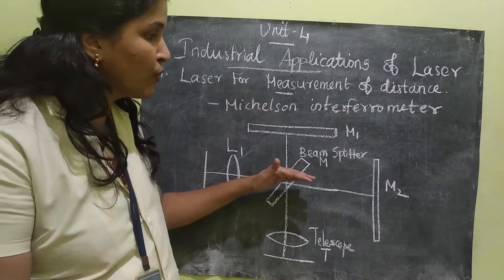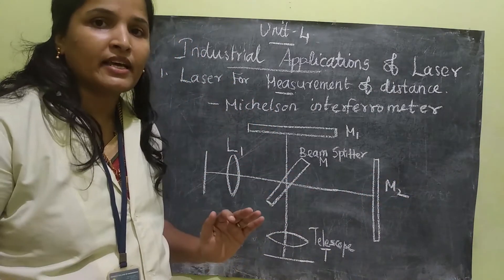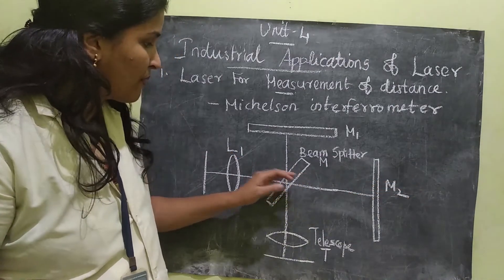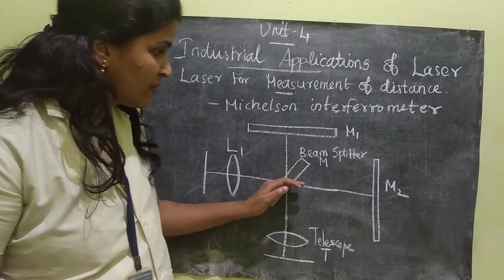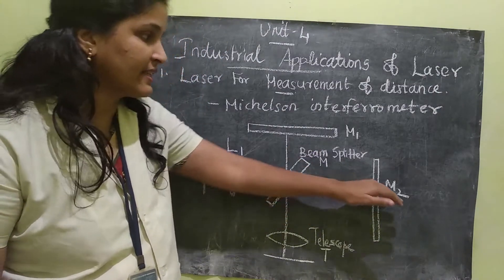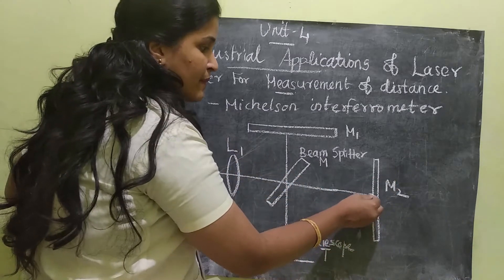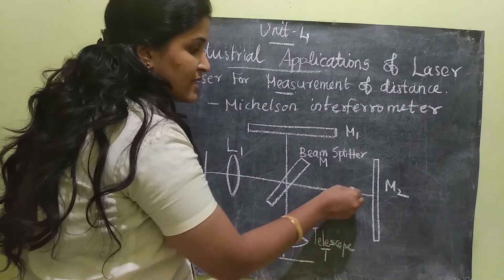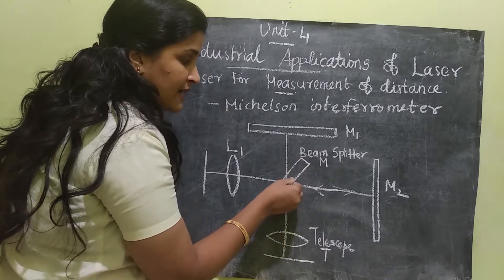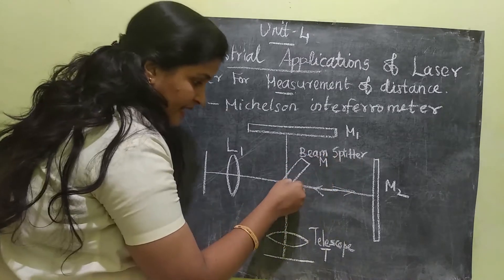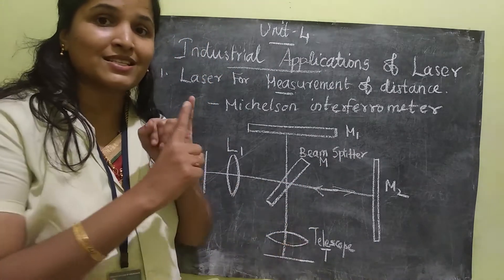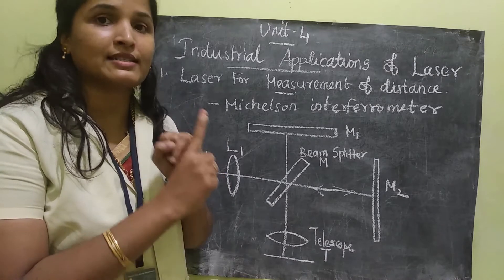One half of the beam will move towards mirror M2, which is a plane mirror. It will be reflected back by M2, then hit the back of the beam splitter, and move towards the telescope. This is the first half of the laser beam.